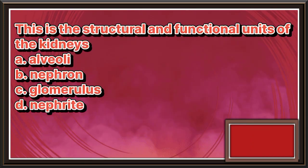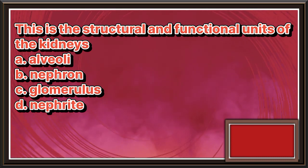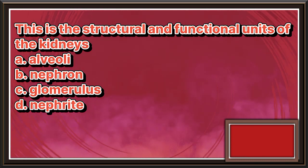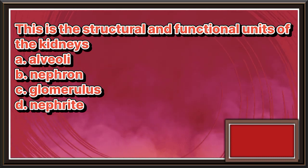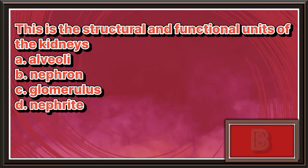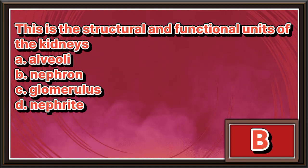This is the structural and functional unit of the kidneys. a. Alveoli. b. Nephron. c. Glomerulus. d. Nephrite. The answer is letter b.